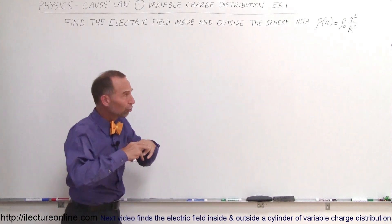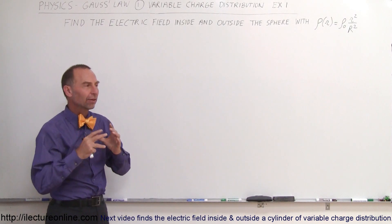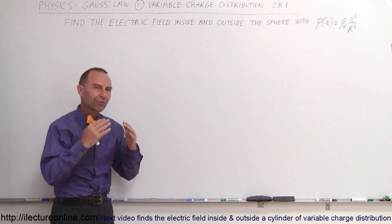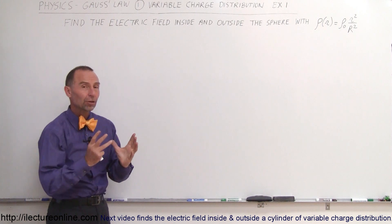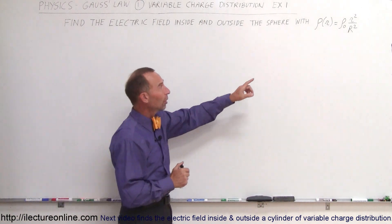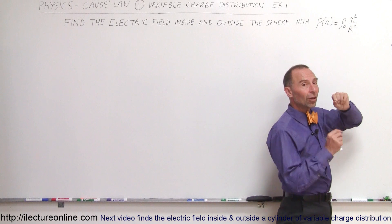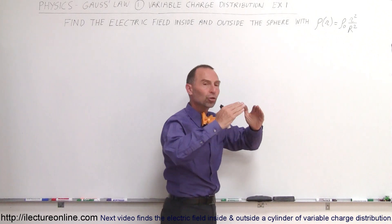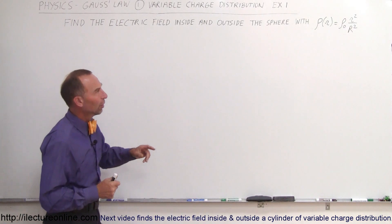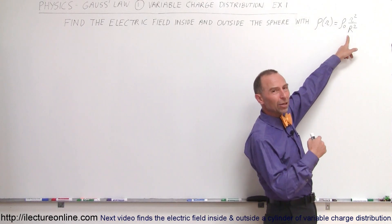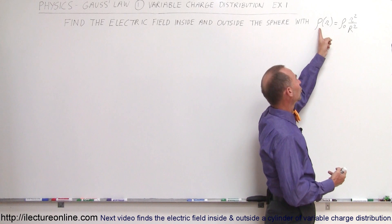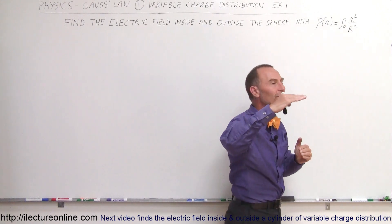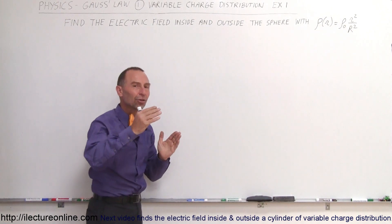This indicates that there's charge throughout the sphere, meaning it's not a conductor. If it were a conductor, the charge would reside only at the surface and there would be no electric field inside. In this case, the charge is distributed non-uniformly as a function of radius. When little r is zero, there's zero charge, and charge density increases as r² out to the surface. At r equals big R, the charge density equals ρ₀, increasing from zero at the center to maximum at the surface.